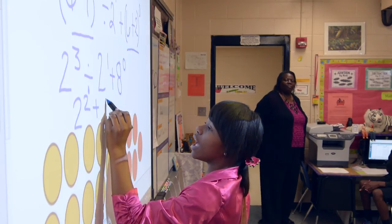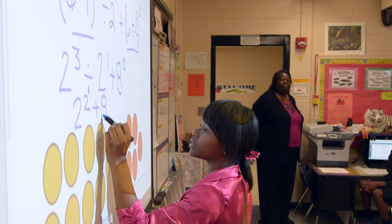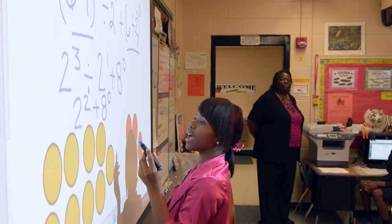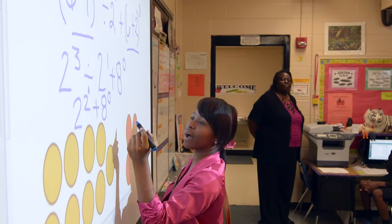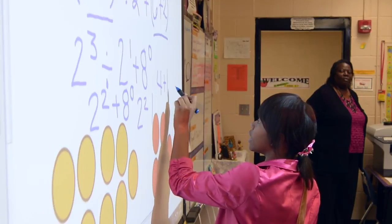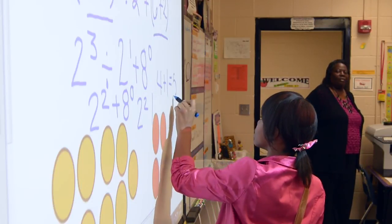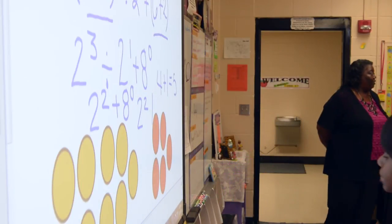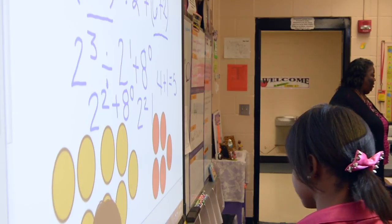They're able to demonstrate their understanding on the board and explain it to the students. 2 to the 0 power and 8 to the 0 power equals 1. So 2 to the second power is 4. 4 plus 1 equals 5. Excellent. Very good.